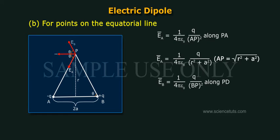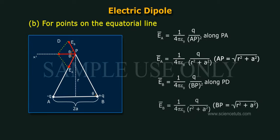E_B is equal to 1 by 4 pi epsilon naught times Q by BP squared along PB, which equals 1 by 4 pi epsilon naught times Q by (R squared plus A squared).